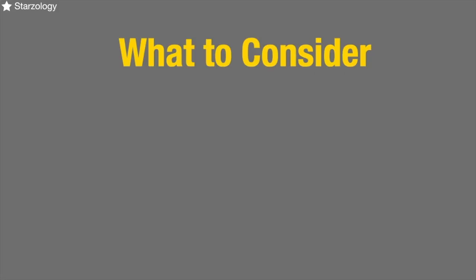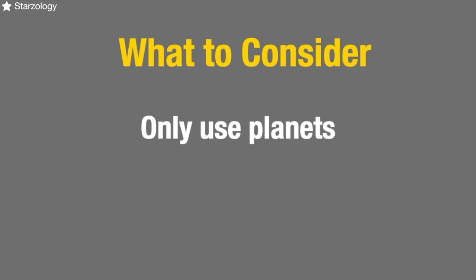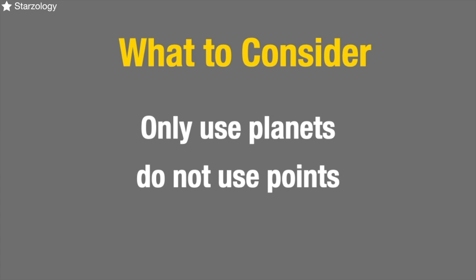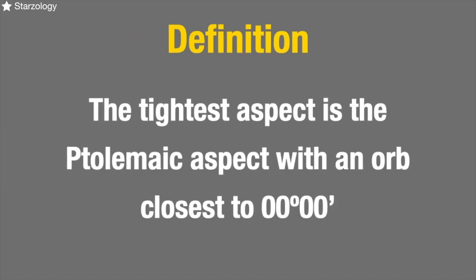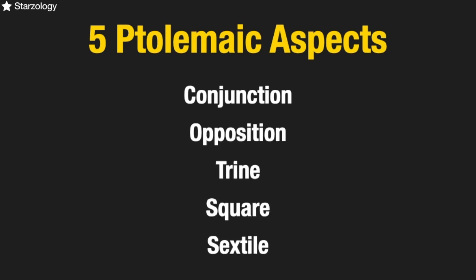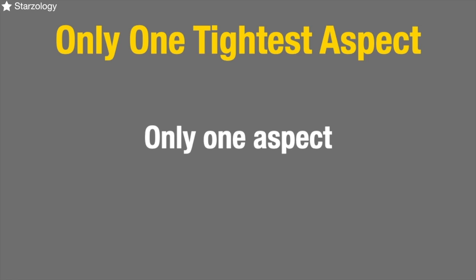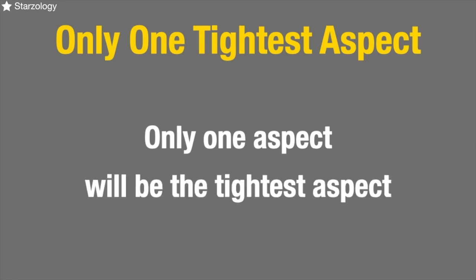Let's look at how to find the tightest aspect. First, you're only going to use aspects between planets — we are not interested in aspects between points, or aspects between planets and points. Only aspects between two planets, because the planets are the energies within the chart. The tightest aspect is the Ptolemaic aspect with an orb closest to zero degrees, zero minutes. The five Ptolemaic aspects are the conjunction, the opposition, the trine, the square, and the sextile. There will only be one tightest aspect.